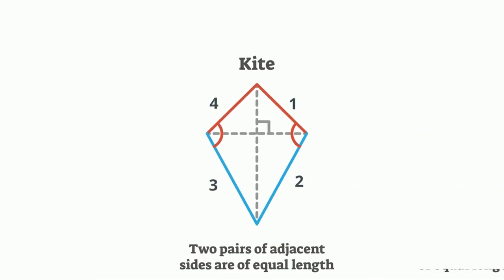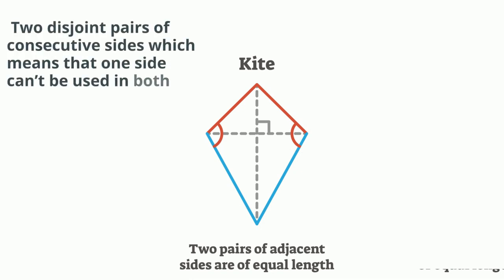One of the first things you may notice is that there are two pairs of different linked sides. A fancy word to describe this is that a kite has two disjoint pairs of consecutive sides. Disjoint pairs means that one side can't be used in both pairs.